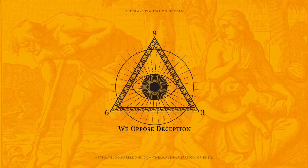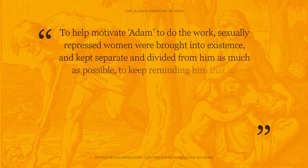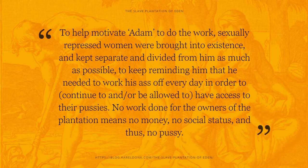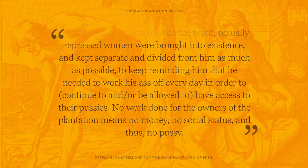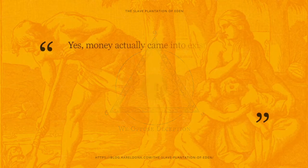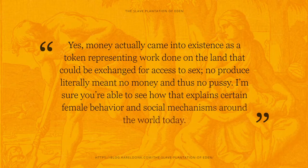To help motivate Adam to do the work, sexually repressed women were brought into existence and kept separate and divided from him as much as possible, to keep reminding him that he needed to work his ass off every day in order to continue to, and or be allowed to, have access to their pusses. No work done for the owners of the plantation means no money, no social status, and thus no pussy. Yes, money actually came into existence as a token representing work done on the land that could be exchanged for access to sex. No produce literally meant no money, and thus no pussy. I'm sure you're able to see how that explains certain female behavior and social mechanisms around the world today.